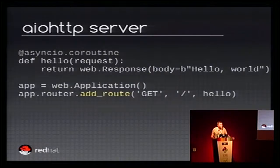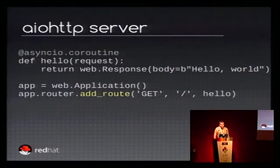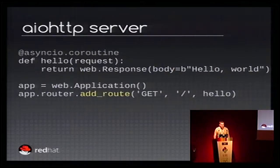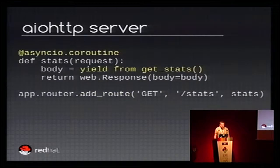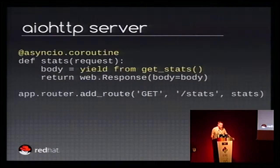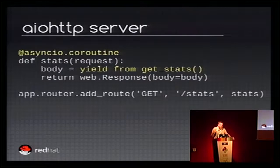This is the most simple example of a hello world using aiohttp to write a very basic server. You define a handler for a request, and you have to build a response object with the body 'hello world'. You create an application and connect the handler to a URL using a router. The handler is a coroutine, so since it's a coroutine you can use any AsyncIO task or features. For example, here I'm using a hypothetical get_stats function, so you can run a long process in the background and return the result later.